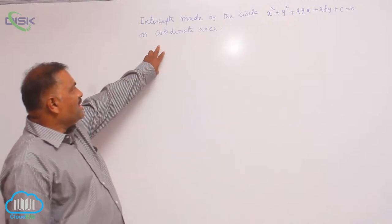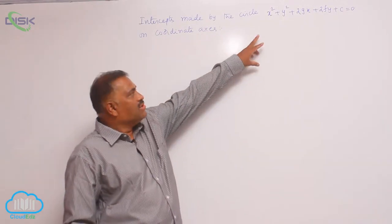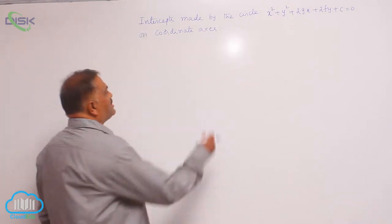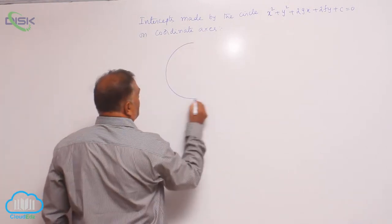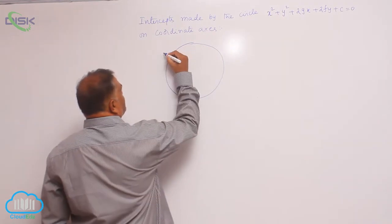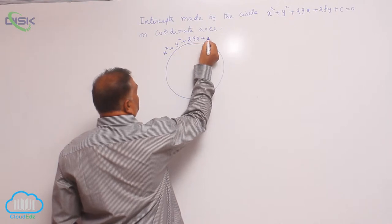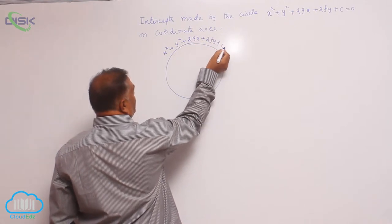Today we will discuss the intercepts made by the general equation of a circle on coordinate axes. Consider the circle equation x² + y² + 2gx + 2fy + c = 0.